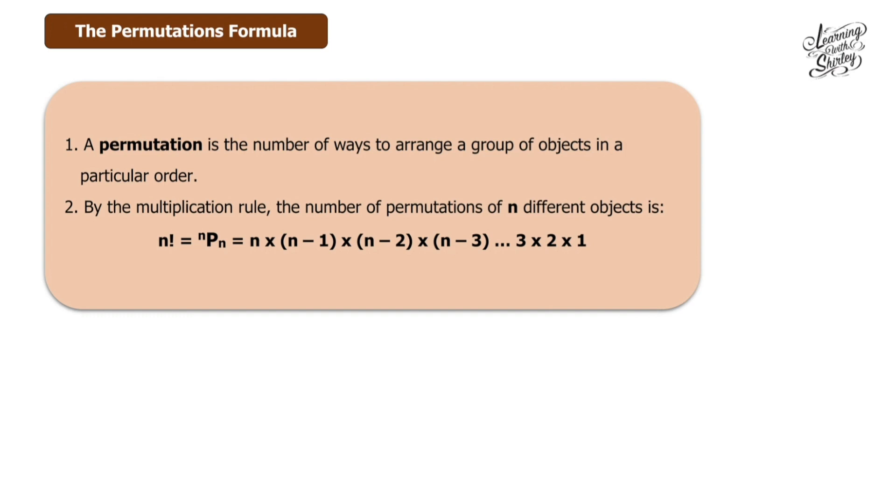By the multiplication rule, the number of permutations of n different objects is n factorial. This is factorial notation – not an exclamation mark. In Malay, it's called 'faktorial'. So n! = nPn = n × (n-1) × (n-2) × (n-3) ... × 3 × 2 × 1, listing down until 1.